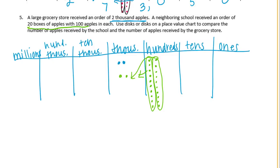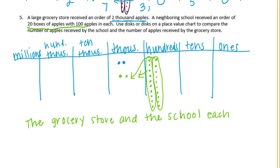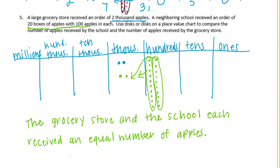The grocery store and the school each received an equal number of apples. The store equals 2,000. The school had 20 times 100, which we just proved also equals 2,000. So they are the same.